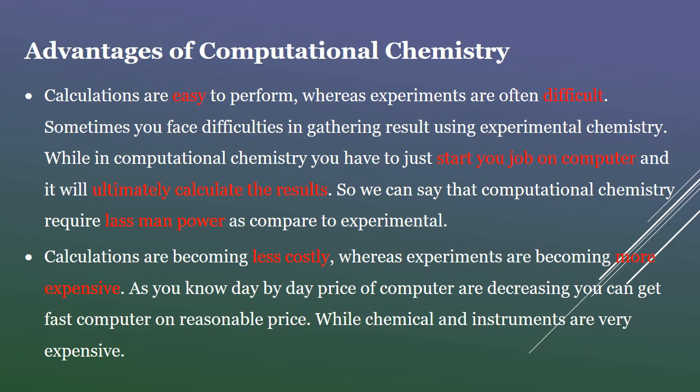Advantages of computational chemistry: calculations are easy to perform, whereas experiments are often difficult. Sometimes you face difficulties in gathering results using experimental chemistry, while in computational chemistry you just start your job on a computer and it will calculate the results. Computational chemistry requires less manpower compared to experimental.